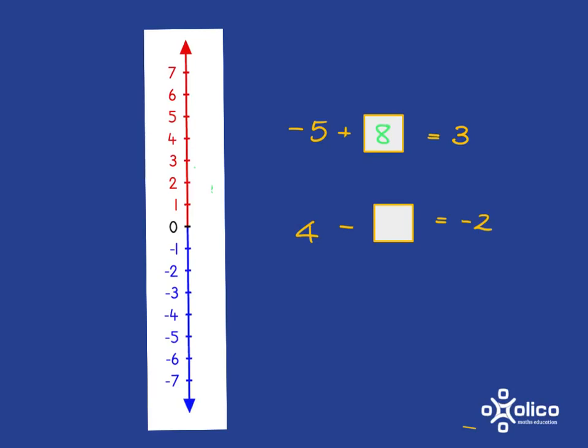So our starting point for this one is 4, and we know we're going down because we're subtracting. And we know we want to end up at negative 2. So, how far have we gone down? Well, we went 4 down to get to 0, and 2 more down to get to negative 2. So, in total, we've gone 6 down. So, 4 subtract 6 gives me negative 2.